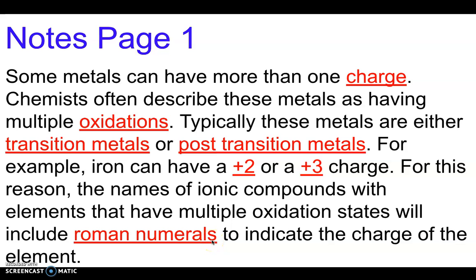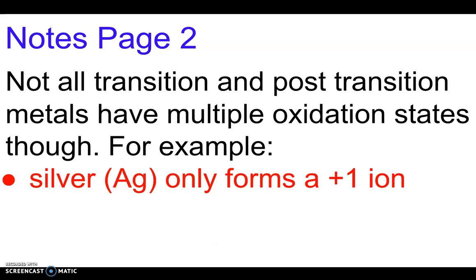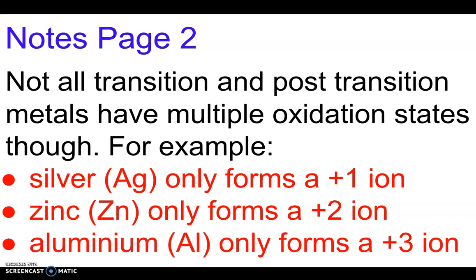Not all transition and post transition metals have multiple oxidation states though. For example, silver (Ag) only forms a +1 ion, zinc (Zn) only forms a +2 ion, and aluminum (Al) only forms a +3 ion. Now Al you can get from the Lewis structure, so that one you don't really have to memorize as long as you know how to find the charge from the number of valence electrons. So really silver and zinc are going to be the only two that you actually have to memorize.